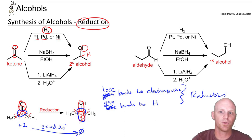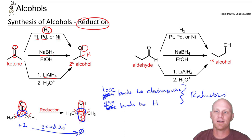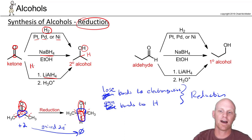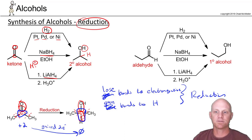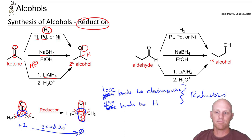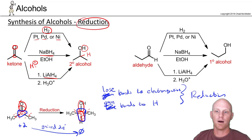We have two new reagents here: sodium borohydride (NaBH₄) and lithium aluminum hydride (LiAlH₄). These are called hydride reagents — they are the equivalent of having H⁻, the hydride ion, in solution. There are reasons we don't use H⁻ specifically, so we use these alternative reagents. Both will accomplish the same thing as H₂ with a catalyst for ketones and aldehydes, but in a different fashion.